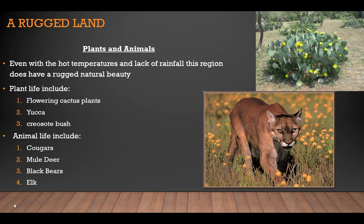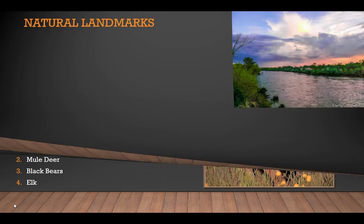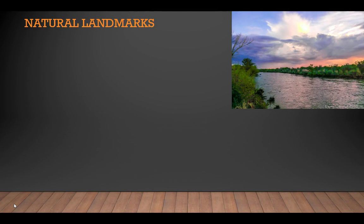Besides plants, animals that thrive in this region include cougars, mule deer, and black bears. The elk of the region, which had once become extinct, have been reintroduced in the Guadalupe Mountains. Snakes and roadrunners also make their home in the desert areas. Even though this region is hot and dry, it is nearly bounded on two sides by rivers. The Pecos River runs from the north to the northeast of the region. The curving Rio Grande flows from the western edge around its southern border. Rivers and natural features serve as landmarks for both residents and visitors.